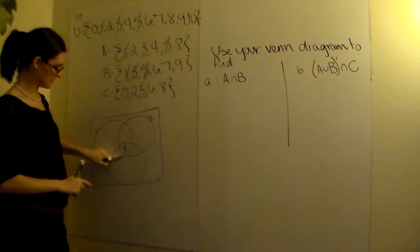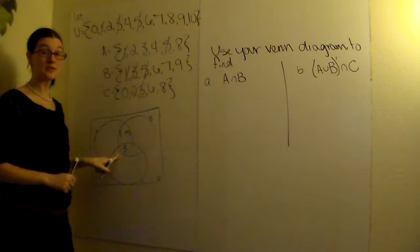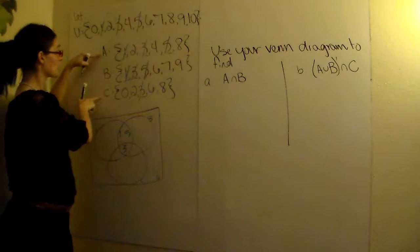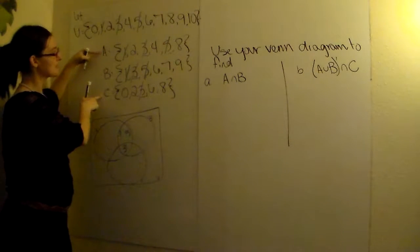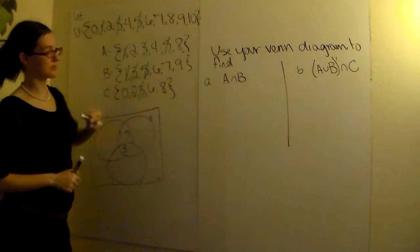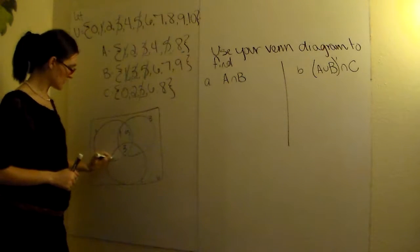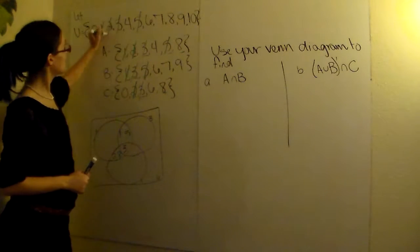For this one A and C, we're going to look at these two sets. Set A and set C. What is the same? We've got a 2 in both and an 8 in both. So I've got 2 and I've got 8. Go cross them out of everywhere.